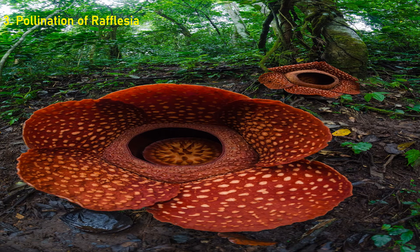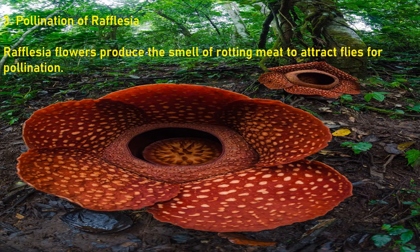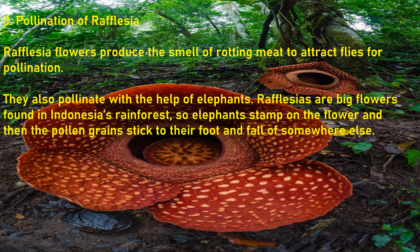Pollination of Rafflesia. This big flower over here is the world's largest flower — it is called Rafflesia. Rafflesia flowers produce the smell of rotting meat to attract flies for pollination. They also pollinate with the help of elephants. Rafflesias are big flowers found in Indonesia's rainforest.